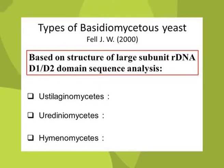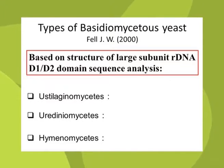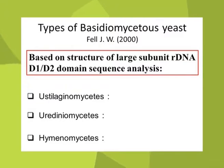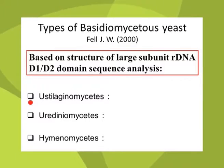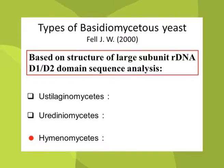On the basis of the structure of the large subunit ribosomal DNA D1-D2 structural domain, Fell et al. in the year 2000 divided basidiomycetous yeasts into three classes: Ustilaginomycetes, Urediniomycetes, and Hymenomycetes.